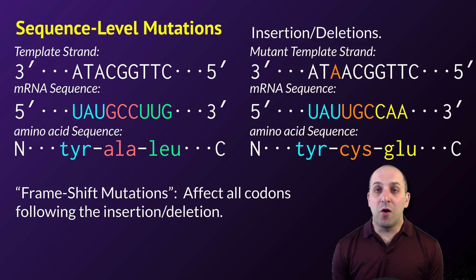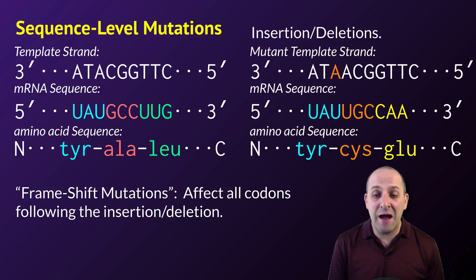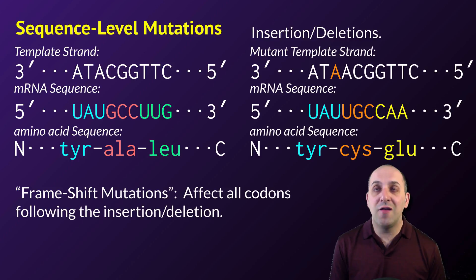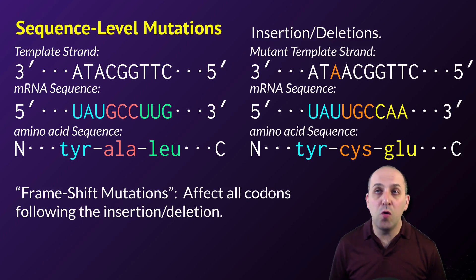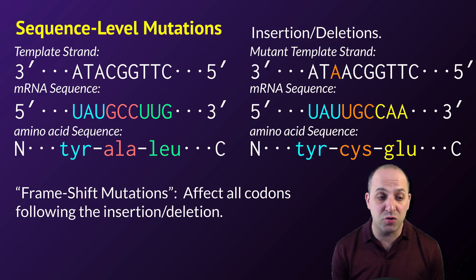Insertion or deletion mutations are referred to as frameshift mutations because they affect every codon downstream from the point where the insertion or deletion occurred. In our point mutation example, only one codon was changed, but in this insertion, every codon downstream from where that adenine was inserted is affected. We've moved the entire reading frame for the ribosome, which is why it's called a frameshift.